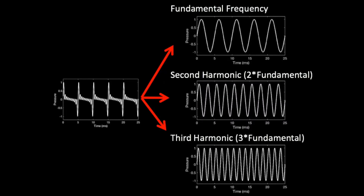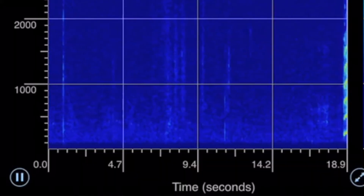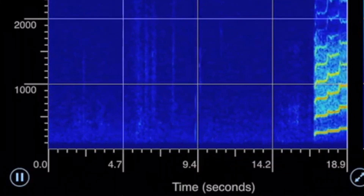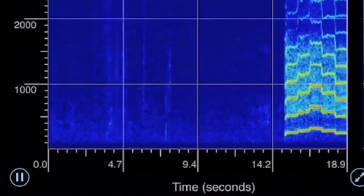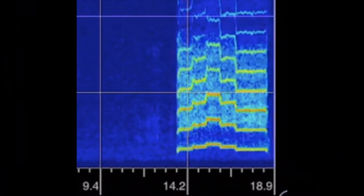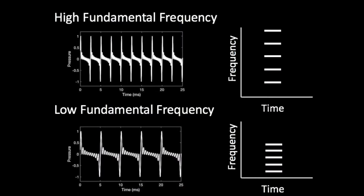Periodic sounds have harmonics, or overtones. You can see bright bands of energy appear as harmonics when singing two notes. The harmonics are integer multiples of the fundamental frequency. Generally, it is thought that sounds with a high fundamental frequency are perceived as being high in pitch, and sounds with a low fundamental frequency are perceived as being low in pitch.